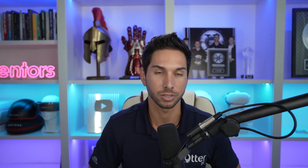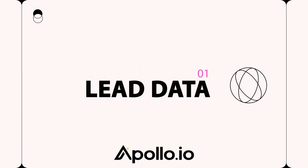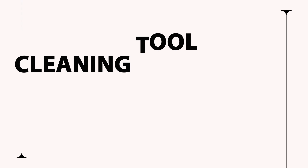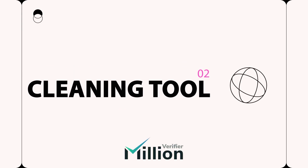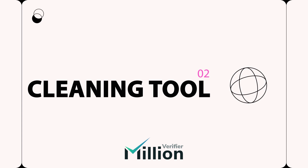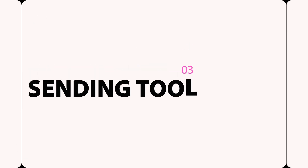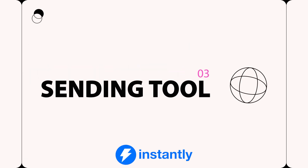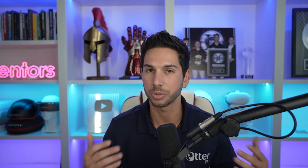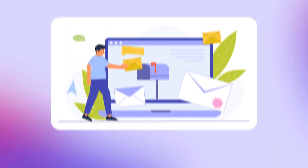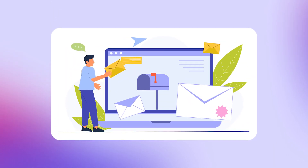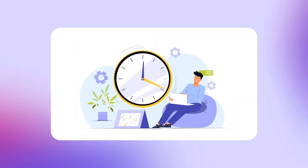The old way of setting up cold email campaigns, you need three things. You need lead data — we use Apollo.io. You need a cleaning tool like Million Verifier to actually validate those emails. And then you import those leads into your cold email sending tool to actually send emails to your prospects. This is a lot of steps, and if you do this frequently to keep your campaigns full of data, it can take a lot of time.